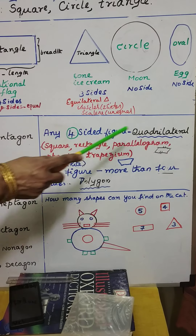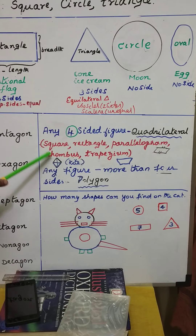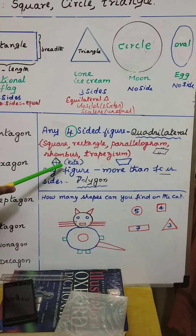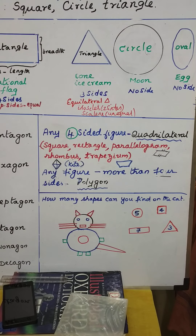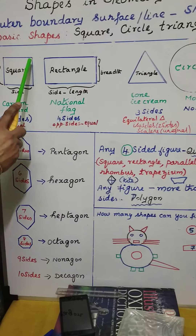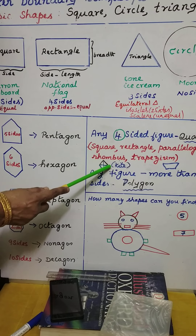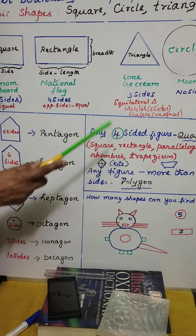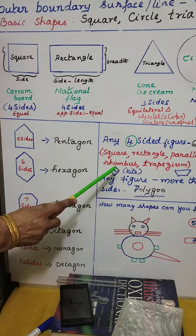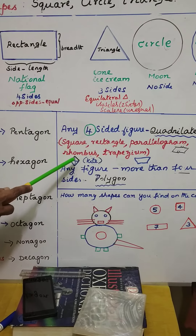Next under quadrilateral is rhombus — like a square, it will be diamond shaped. A kite is an example. But there is a difference between square and rhombus. In a square, all four sides are equal and all four angles are 90 degrees. In a rhombus, all four sides are also equal, but the diagonals cut at 90 degrees — that is the main difference. The best example for rhombus is a kite.